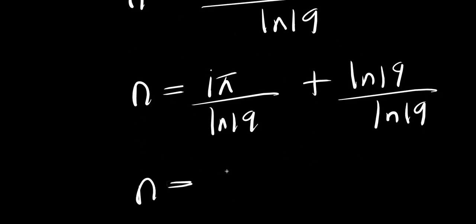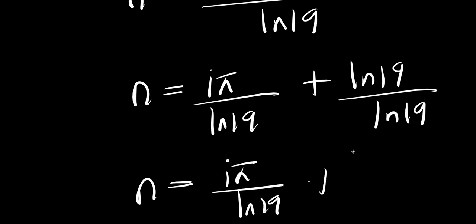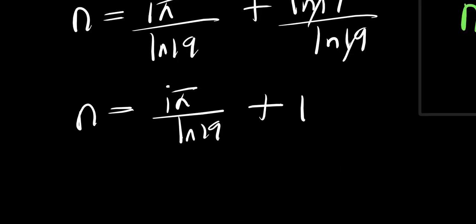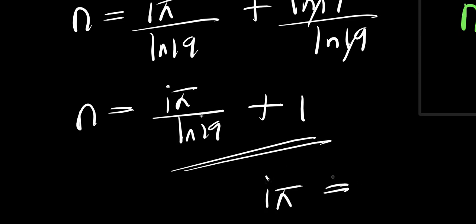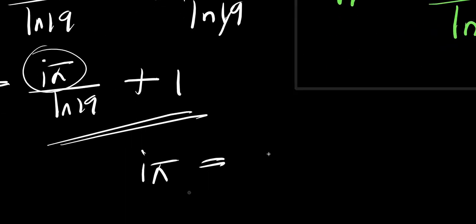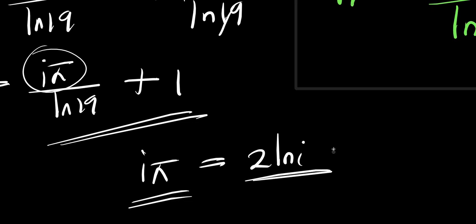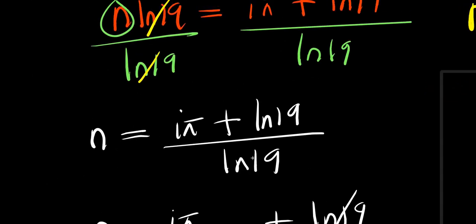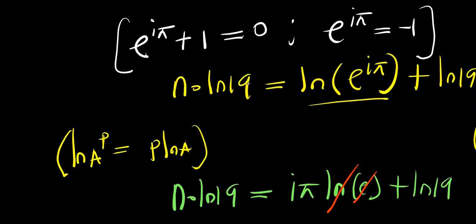Comparing the two results: i times pi and 2 times natural log of i are not the same. This is it, and this is how you solve this exponential problem step by step. Don't forget to subscribe and share this video with your friends.